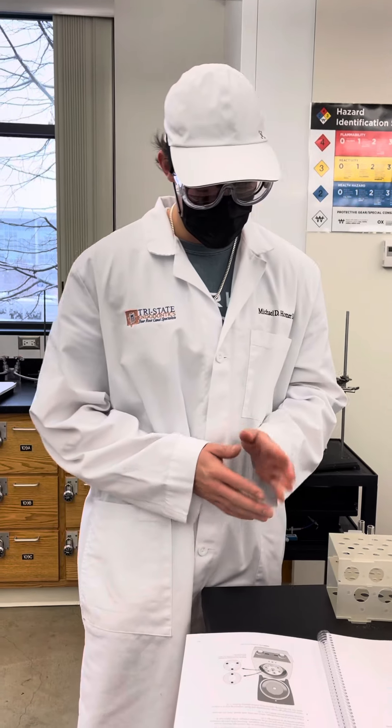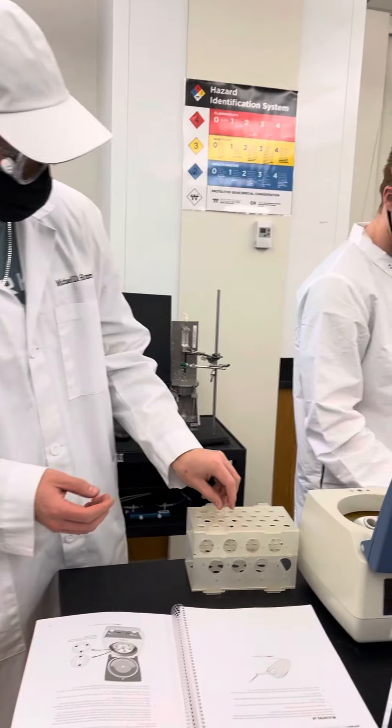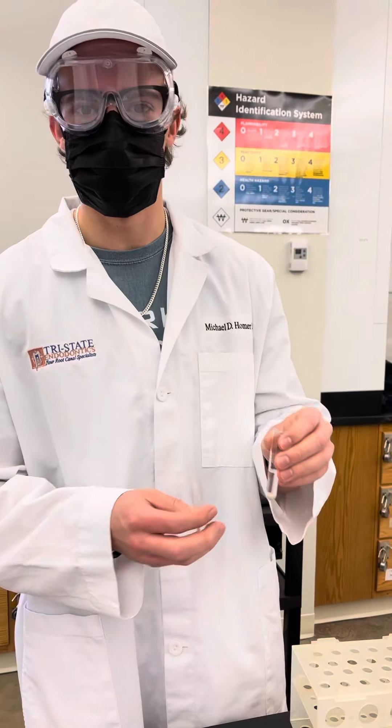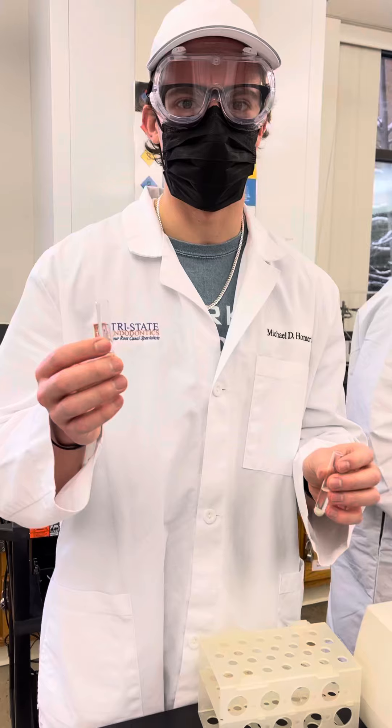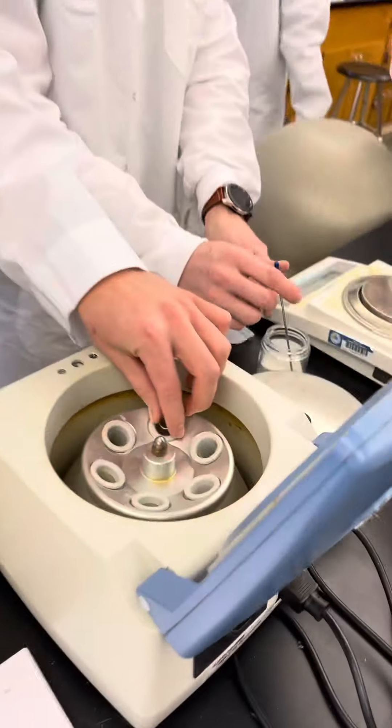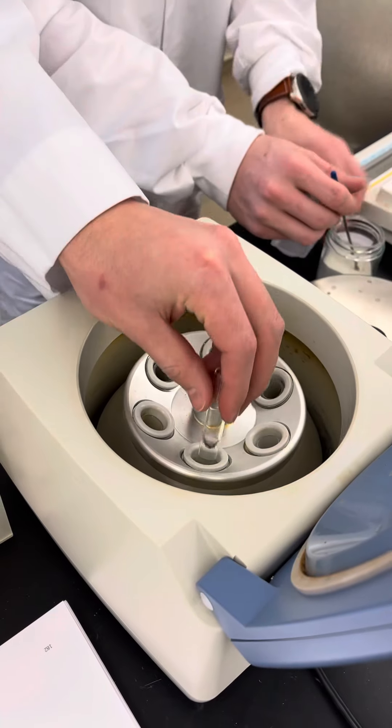So first step, we are going to put our test tubes, put the solutions and create the desired precipitate, and then we're going to take a counterbalance test tube and put it opposite of the other test tube and counterbalance it.